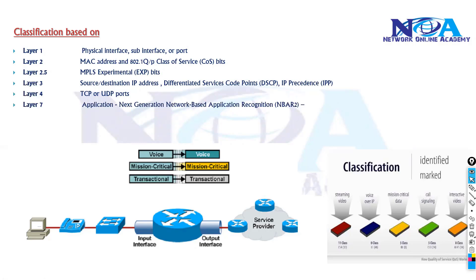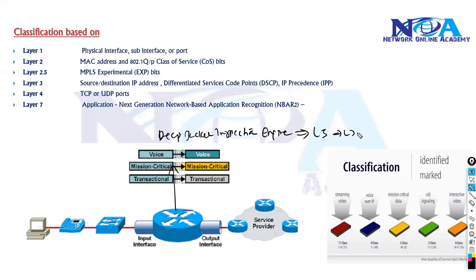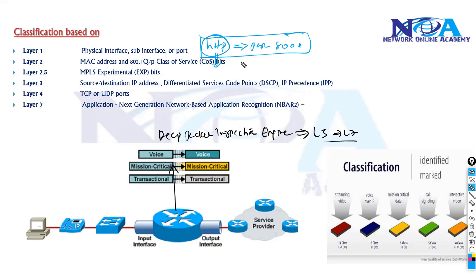We can also match at layer 7 based on the application. Most routers and switches do something called deep packet inspection. With deep packet inspection, an engine inside the device classifies and identifies different protocol types, reading information from layer 3 all the way to layer 7. For example, if you're running an HTTP application on port 8000, it doesn't just check layer 3 or layer 4 — it identifies the actual application running in the backend.